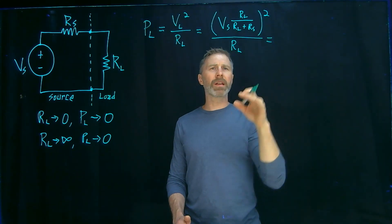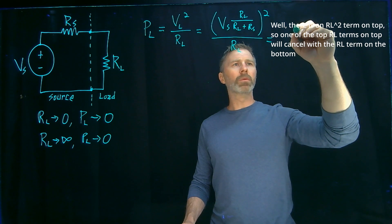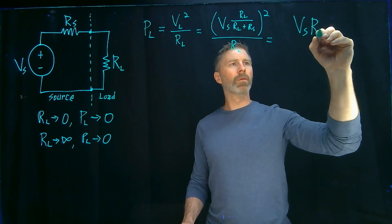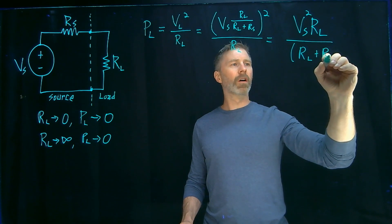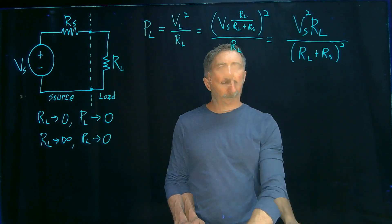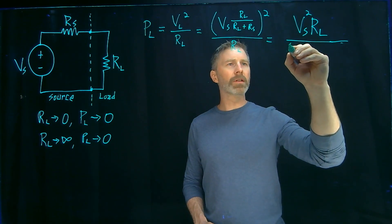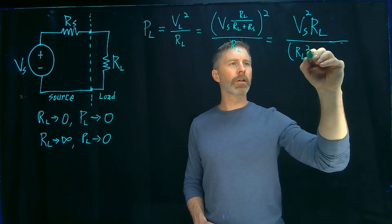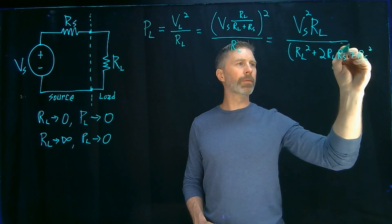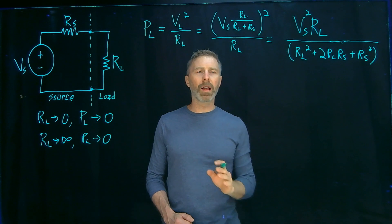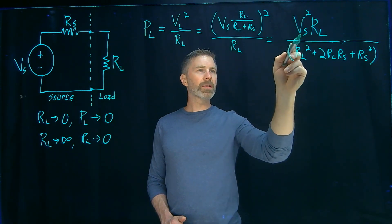Now we can expand this out or make it in a slightly simpler form because these two RLs are going to cancel. We can move this RL plus RS to the bottom. So we get Vs squared RL over RL plus RS, and then that's all squared. And I can expand this out since I'm running out of room on my screen. I'm just going to rewrite it here. So RL plus RS squared will give me RL squared plus 2RLRS plus RS squared. So now I've got the numerator and the denominator. And what we want to do is figure out what is the maximum value that this equation can be.